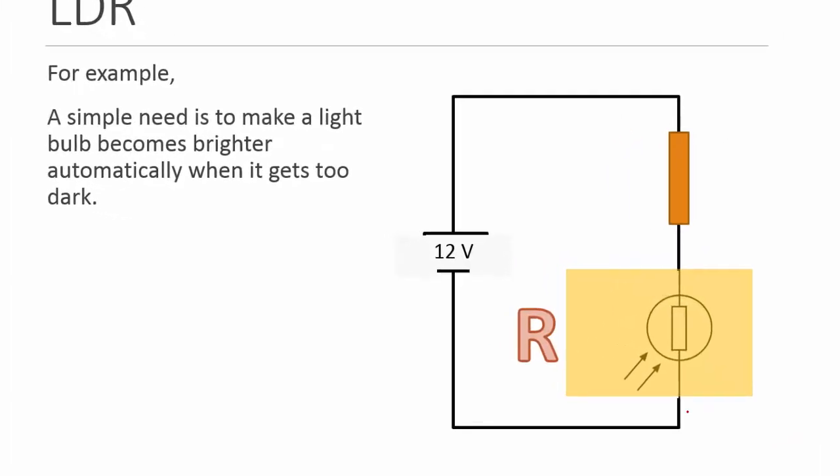So how do we make use of this? For example, a simple need is to make a light bulb become brighter automatically when it gets too dark in the room. What you need to do is, this is a general circuit design, and you tap an output voltage. Your light bulb will be connected at this output, somewhere over here. So we have a certain output voltage.